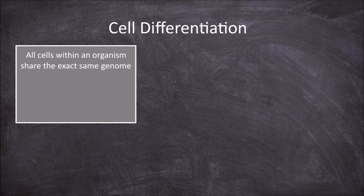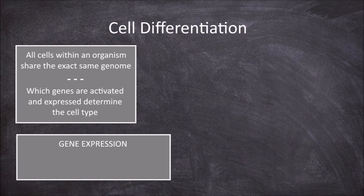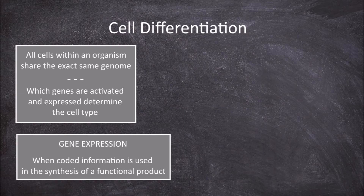All cells within a multicellular organism share the exact same genome. What makes the cells different is what genes are activated and expressed in that cell type. Gene expression is what happens when the information coded in a gene is used in the synthesis of a functional product, usually a protein.